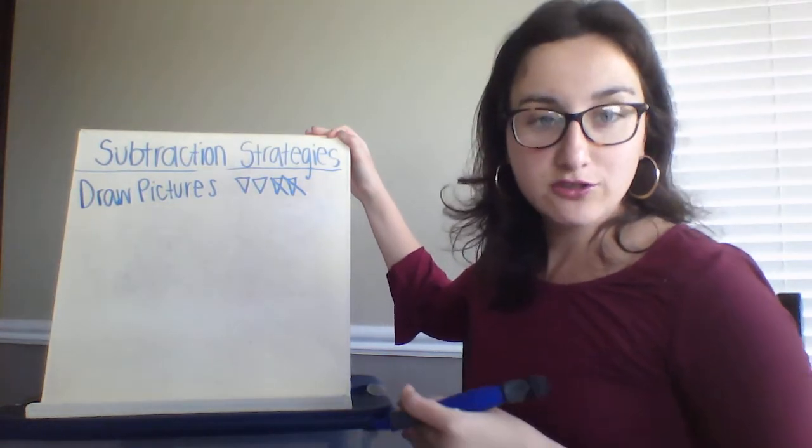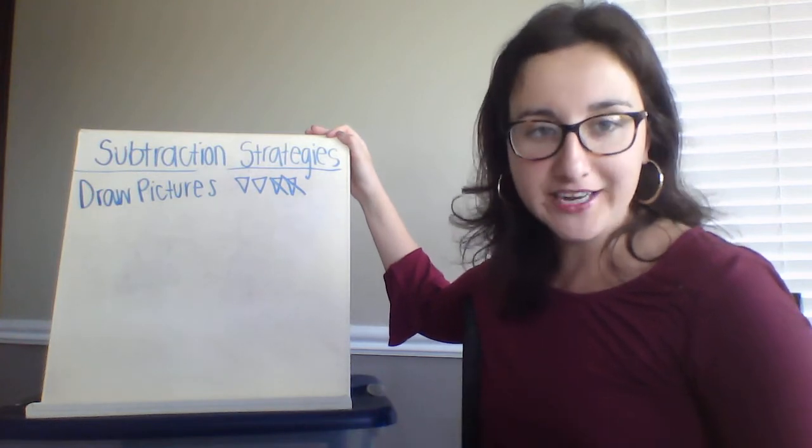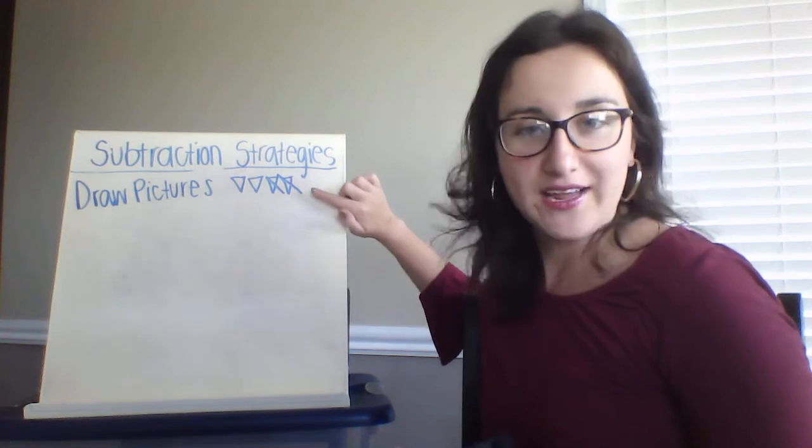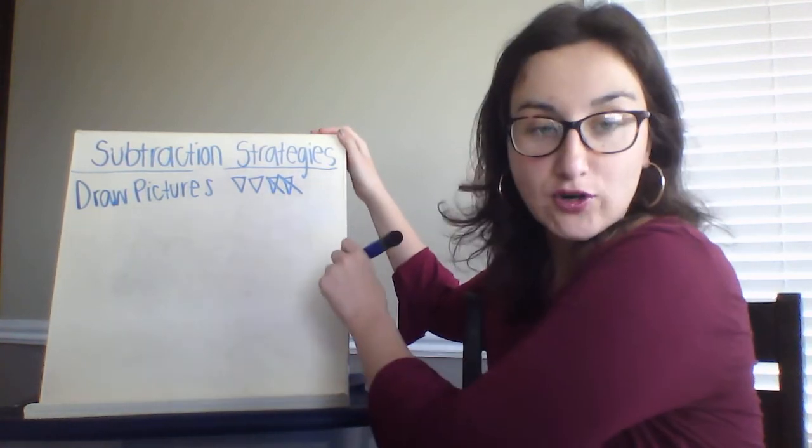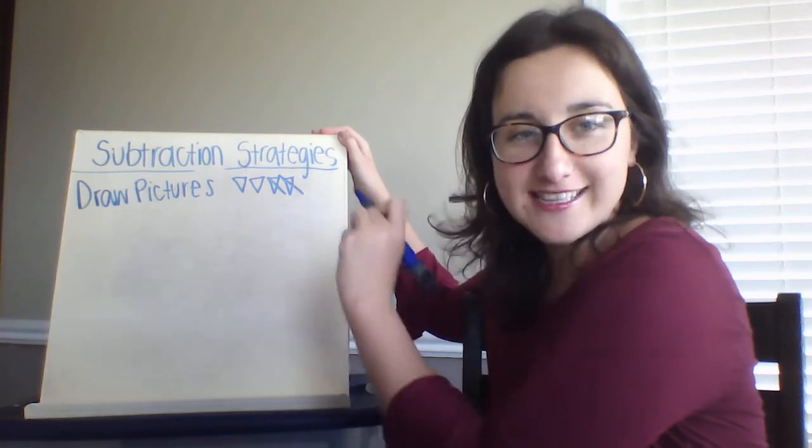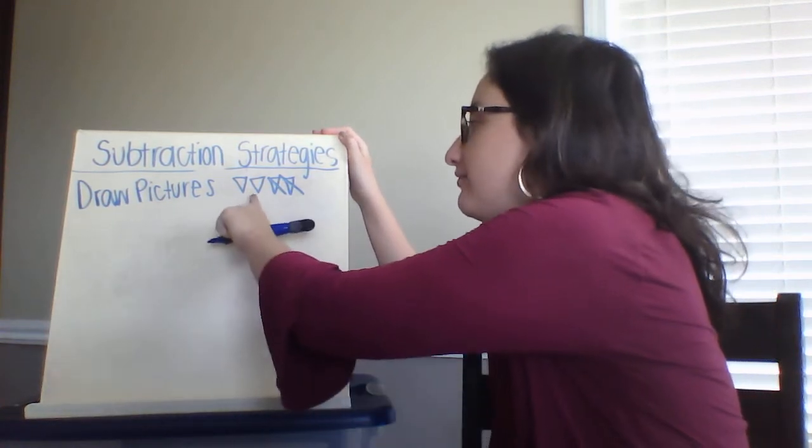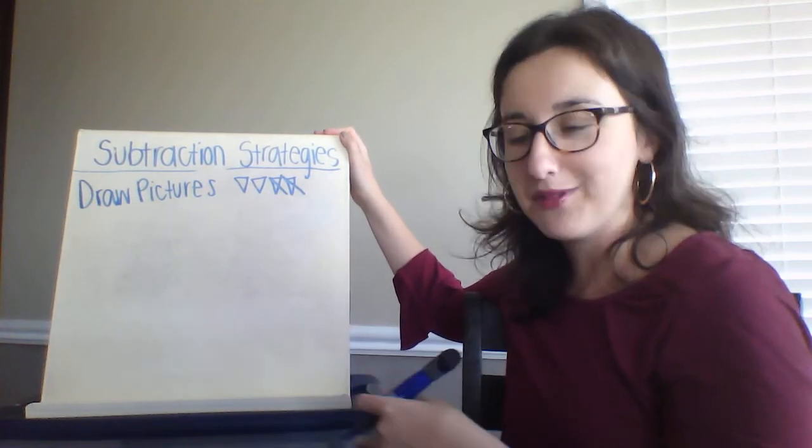If you draw pictures to help you subtract, you can choose to draw whatever type of picture you want. I drew pictures of triangles here. So I drew a total of 4 triangles, and I crossed out 2. So I would be taking away 2, and I would be left with 2. You can use pictures to help you solve subtraction problems.